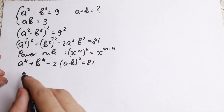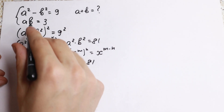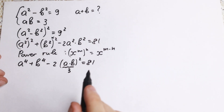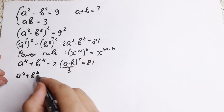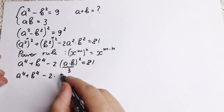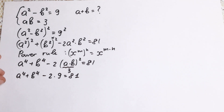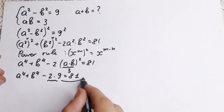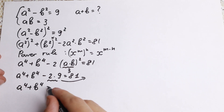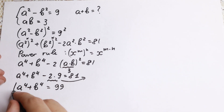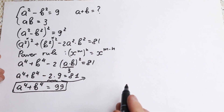So we have the sum of fourth powers, and we don't have direct information about that — but we do have information about the product ab, which equals 3. So: a⁴ + b⁴ minus 2 times 3 squared equals 81. That means a⁴ + b⁴ minus 18 equals 81, so a⁴ + b⁴ equals 99. We find that the sum of fourth powers equals 99.